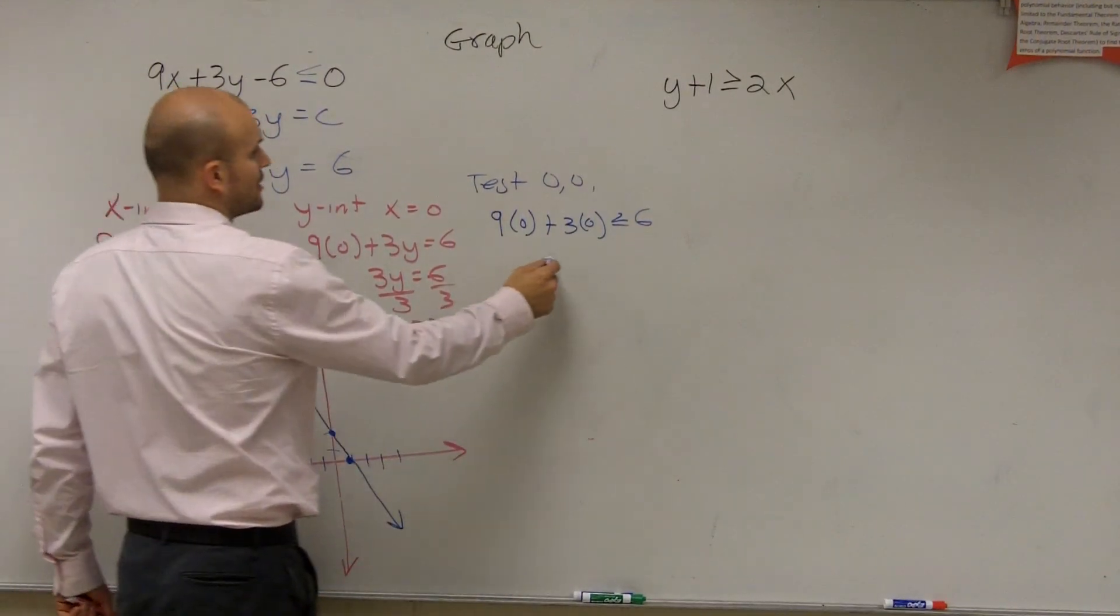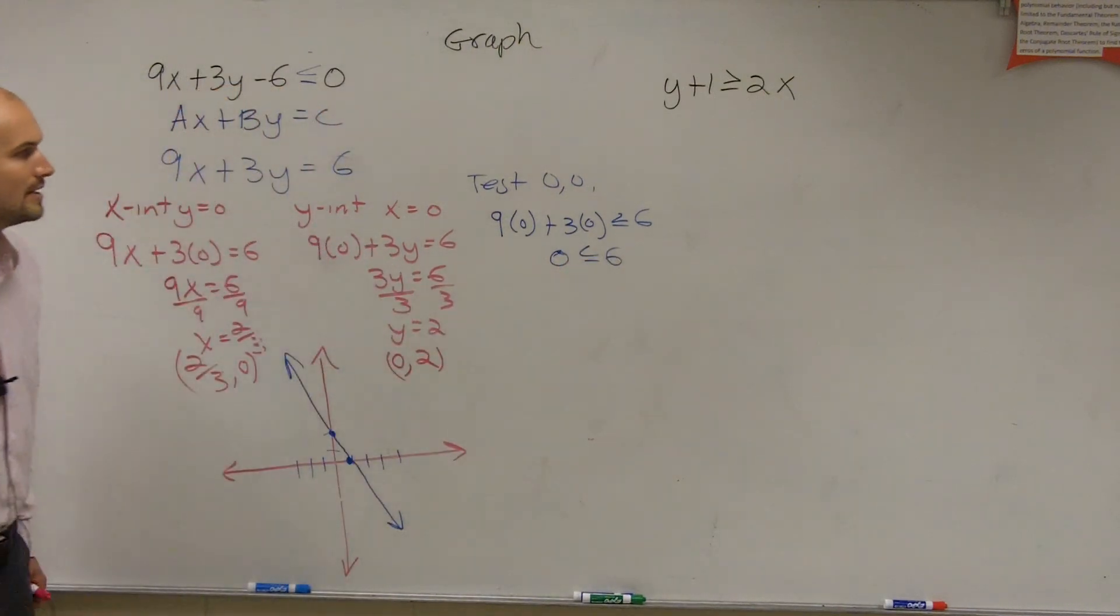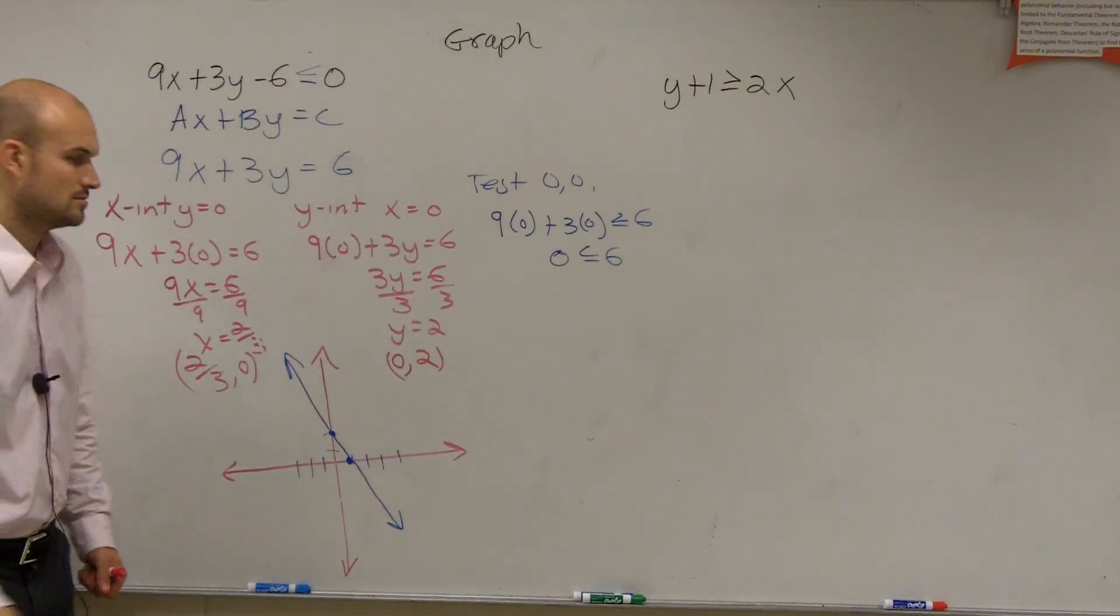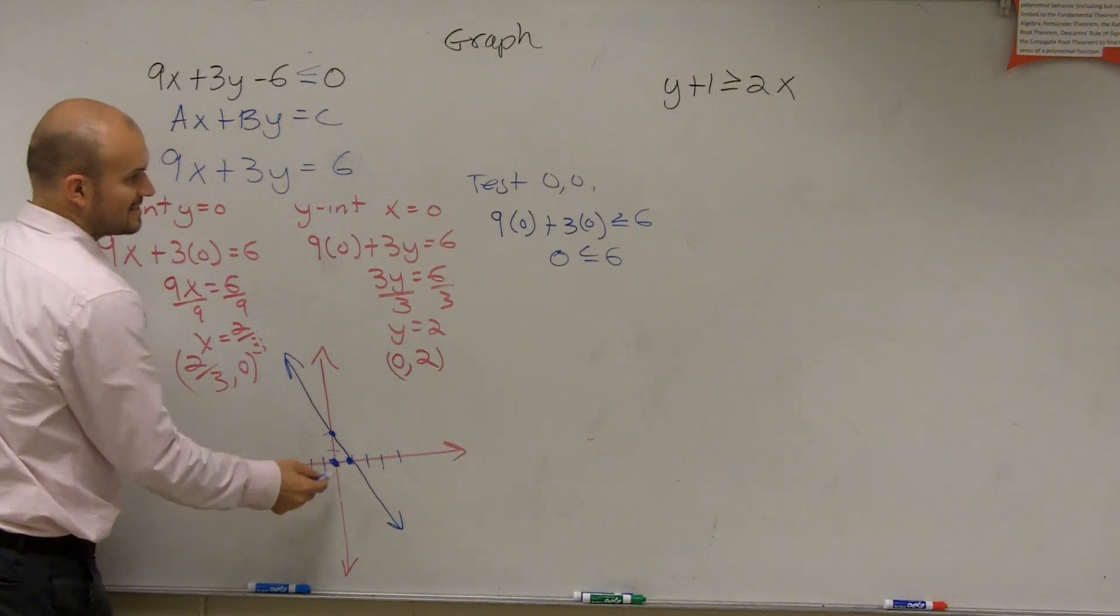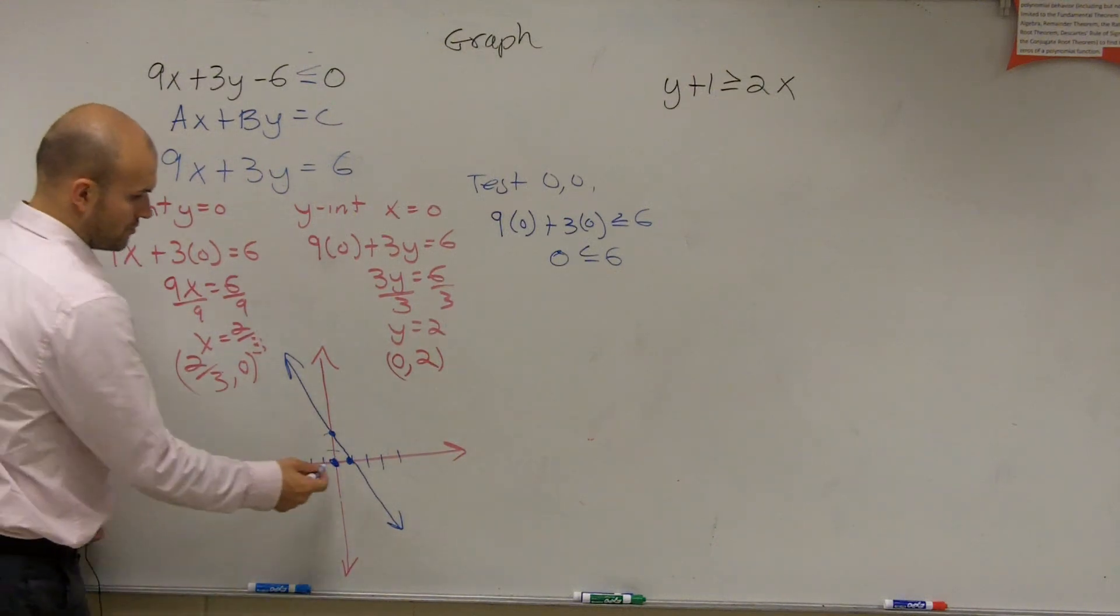So what you get is 0 less than or equal to 6. Is that true or false? Is 0 less than or equal to 6? True. True, right?